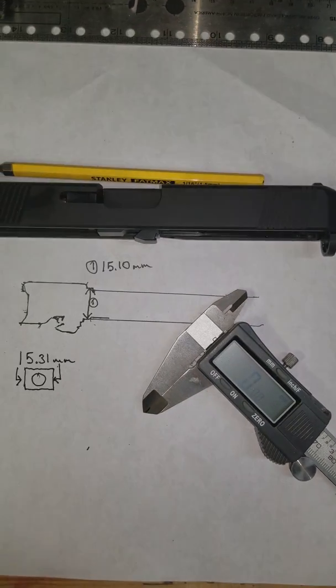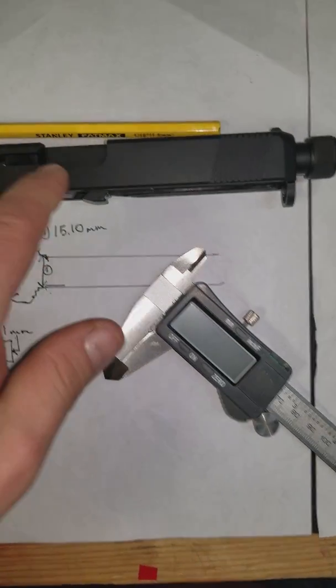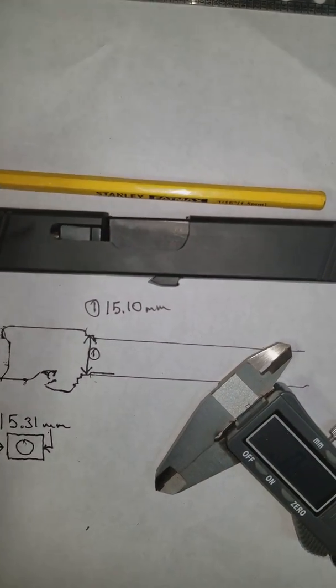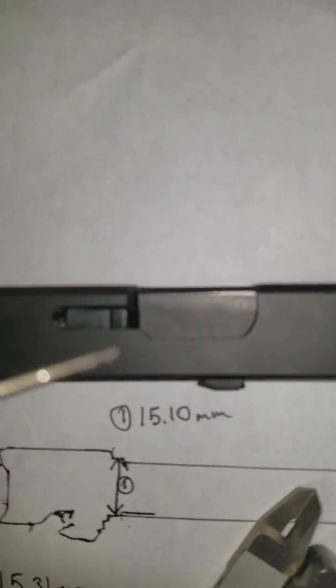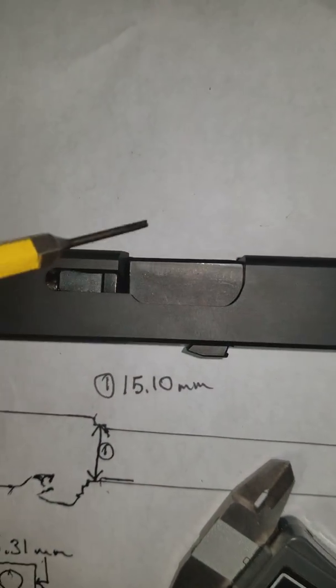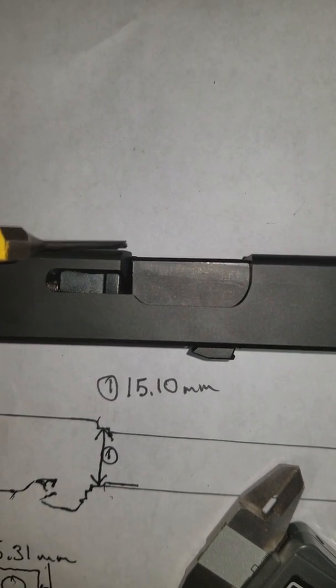I would just like to know how to file that down so that it'll fit. Apparently this needs to be flush with this.